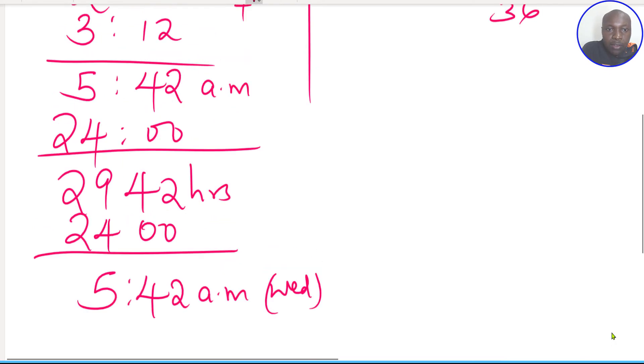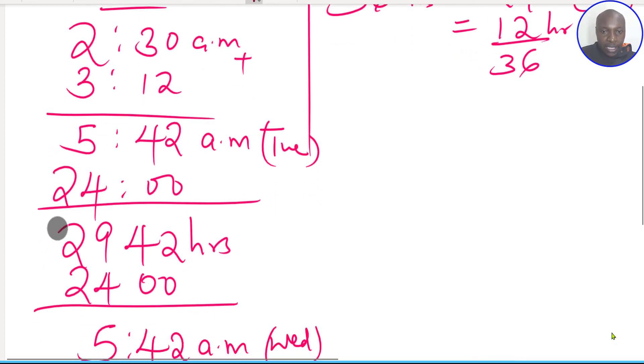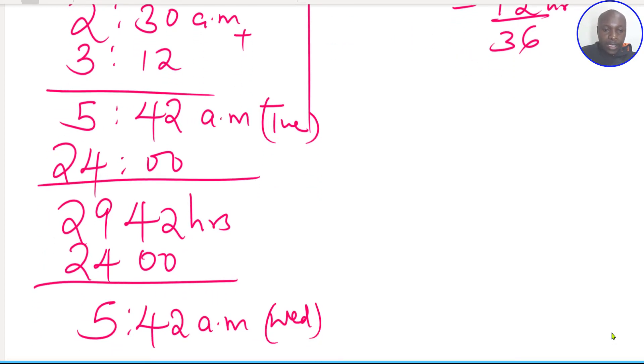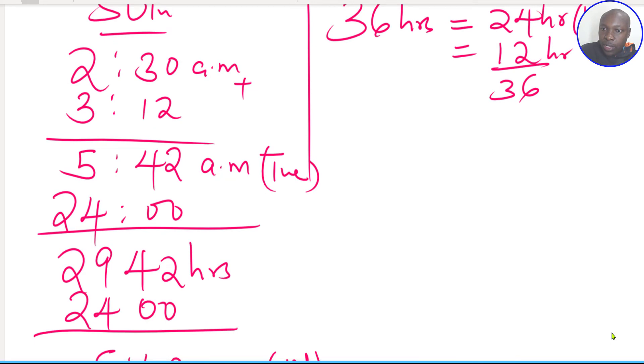Since 5:42 was on Tuesday, from 5:42 am Tuesday, you add 1 day. Exactly 1 day means it will be the next day which is Wednesday at the same time, 5:42 am. Then now after adding 24 hours which is 1 day, now we add 12 hours.